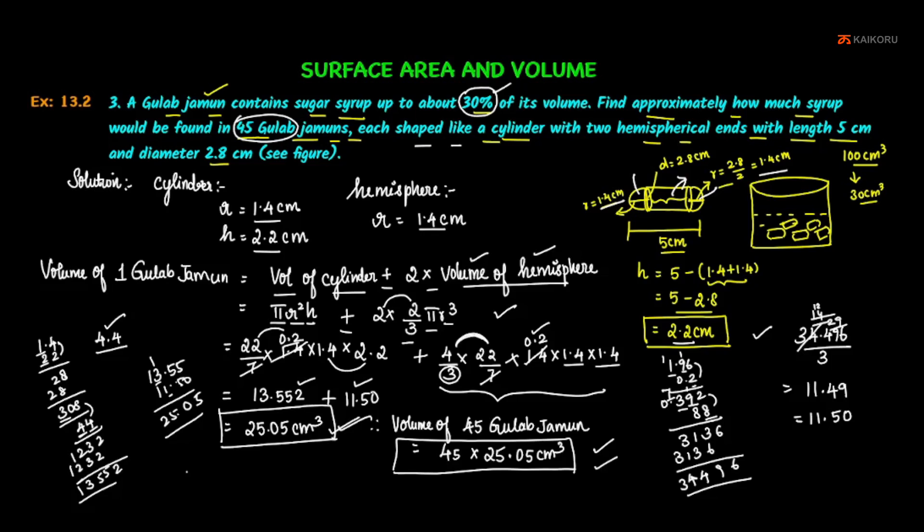Since 30 percent of the volume is sugar syrup, therefore sugar syrup present equals total volume of 45 gulab jamuns: 45 into 25.05 into 30 percent, which is 30 by 100. If you simplify it, the final answer is 338 centimeter cube volume. This is the value of sugar syrup present for 45 gulab jamuns.